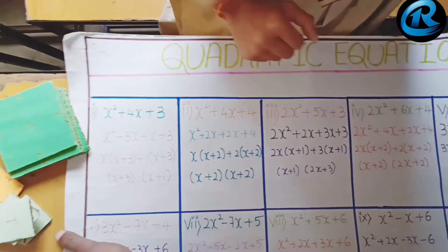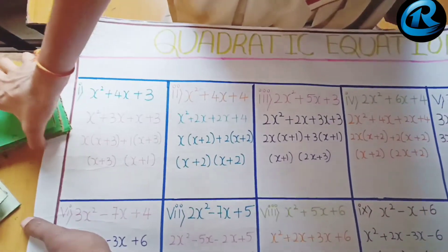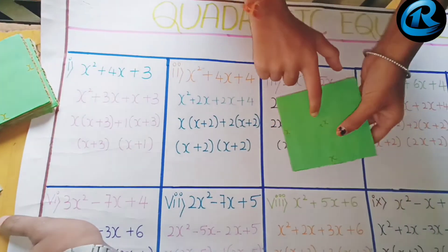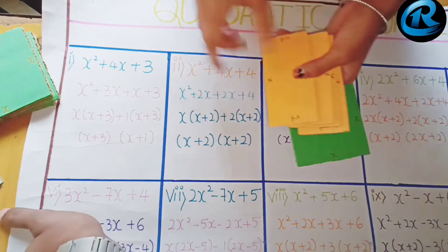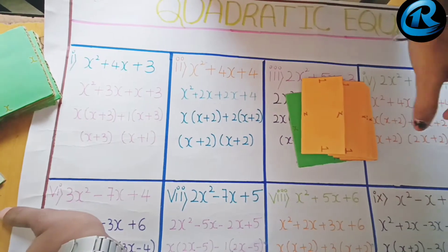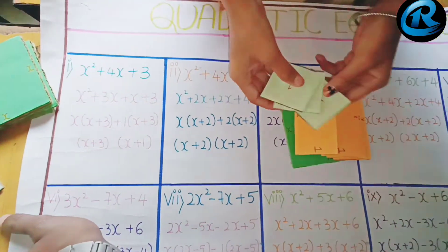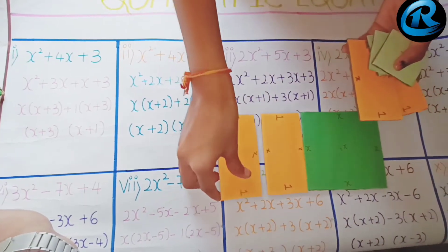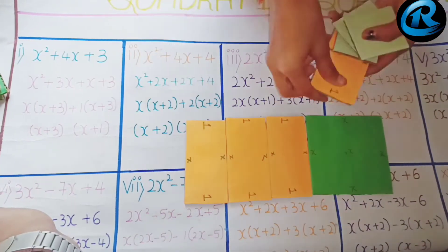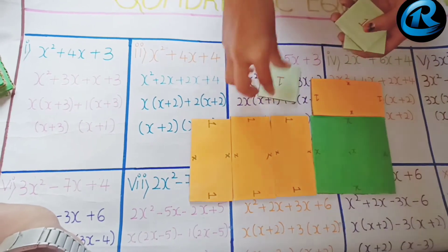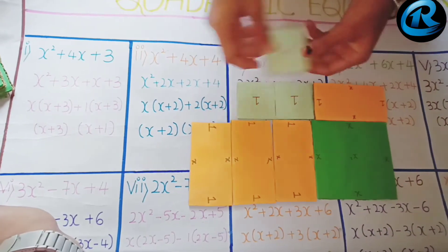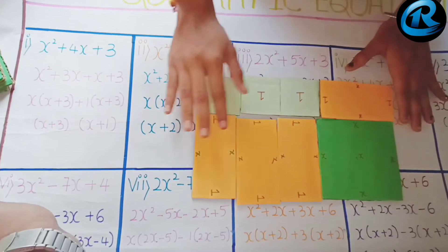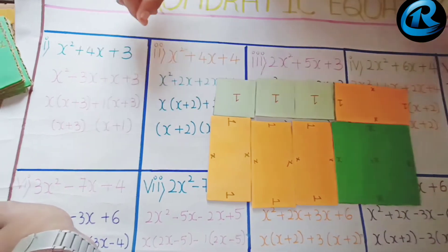Let us take some examples and form quadratic equations. For x² + 4x + 3, we have to take 1 card of x², 4 cards of x, and 3 cards of 1 unit. Now we have to arrange all these cards in a perfect manner so we can find the zeros of the polynomial of the given equation.